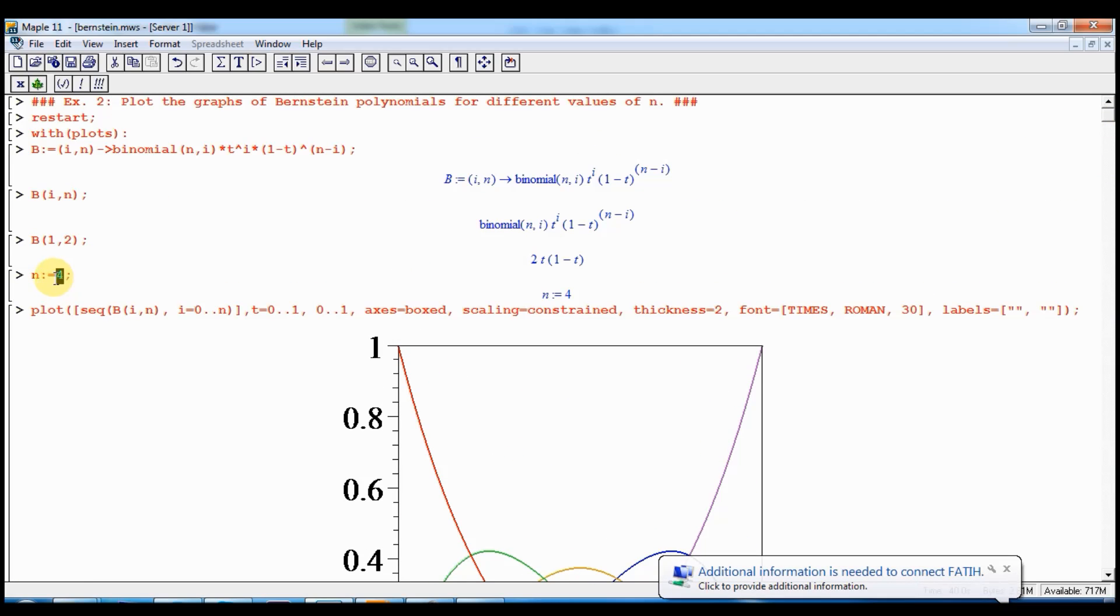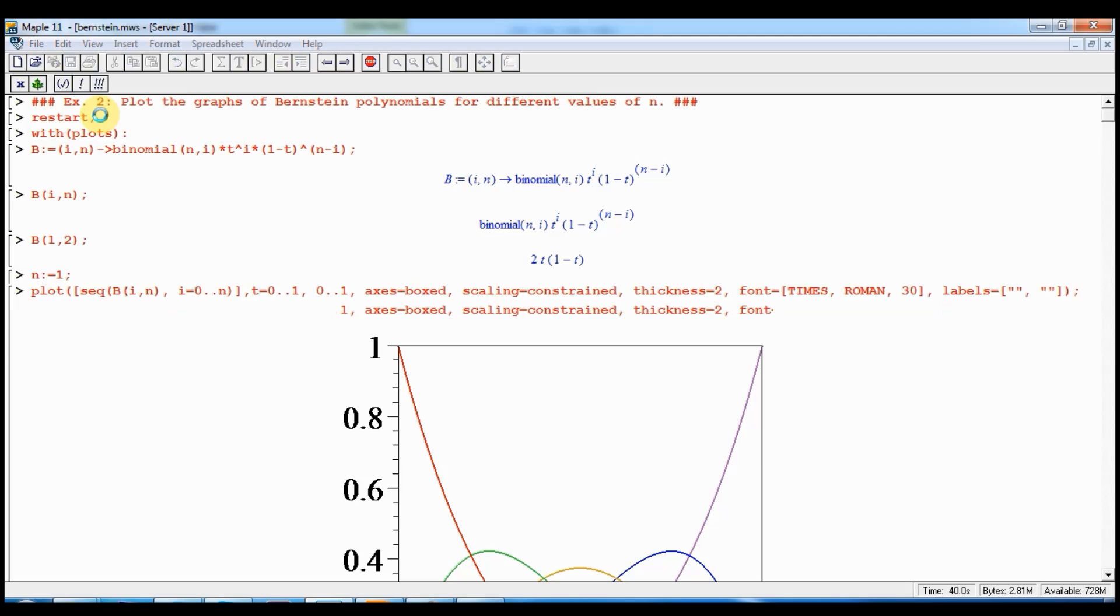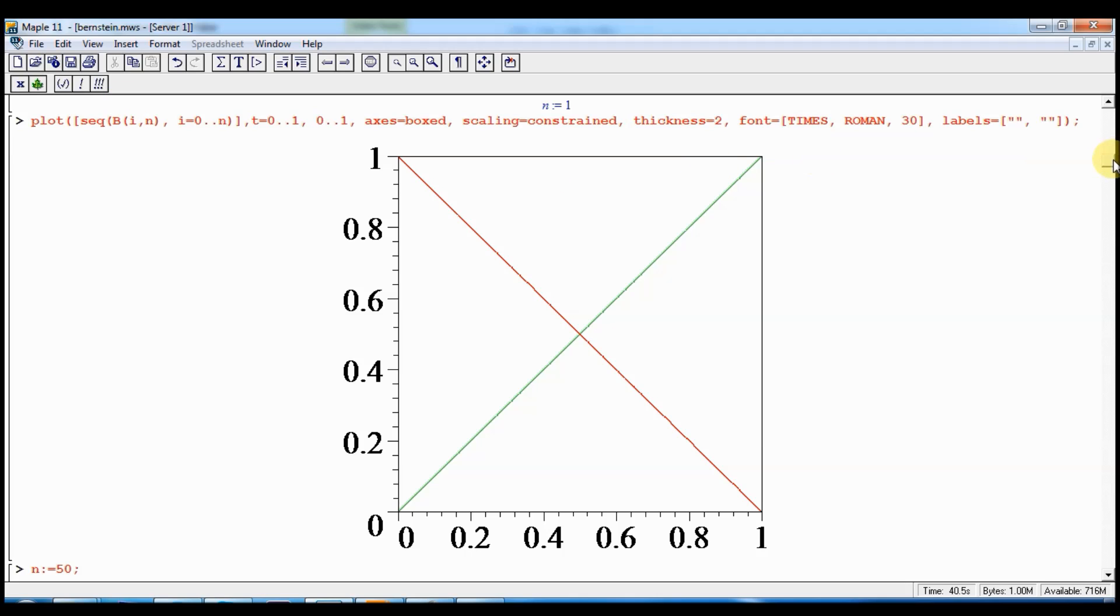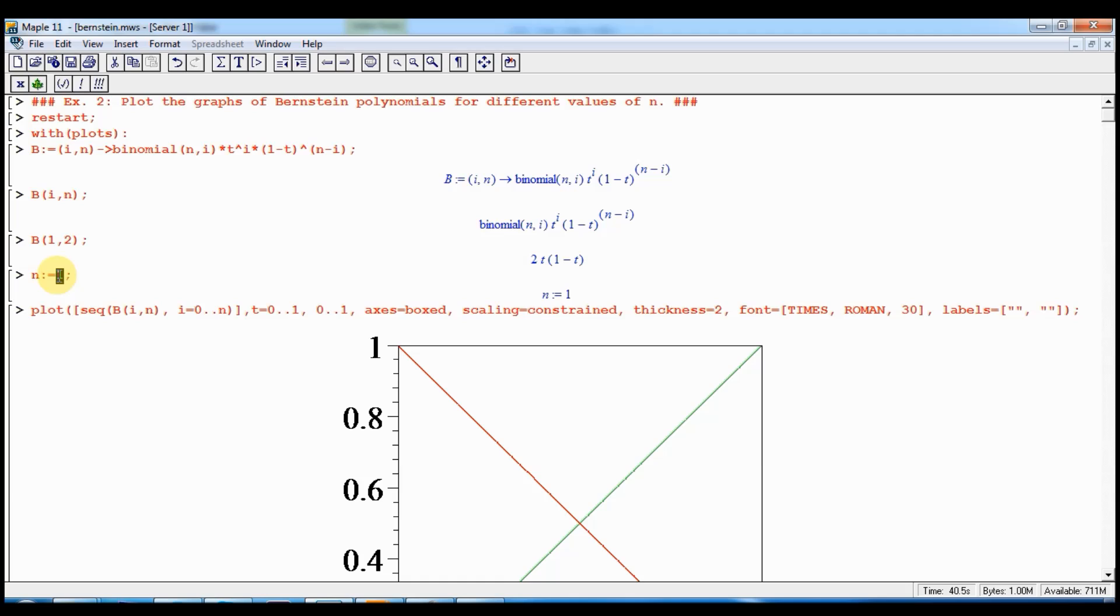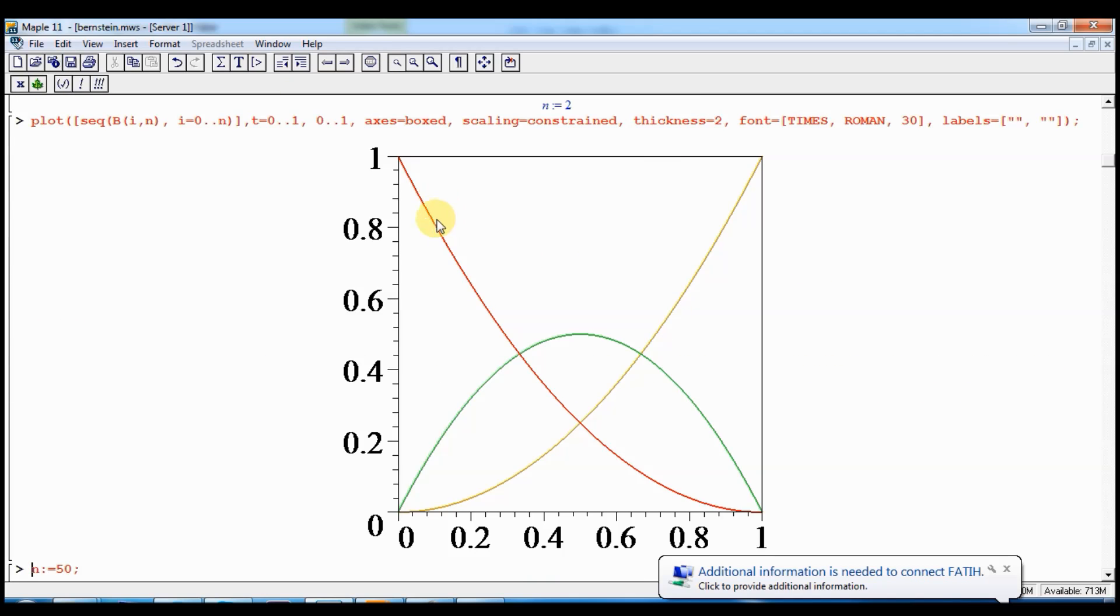Let me change n to 1 and compute the previous lines, just pushing enter at the end of these lines. As a result, I have 2 linear functions here. And finally, let me compute Bernstein polynomials for n equal to 2 and show their graphs. As a result, I have 3 polynomials at the same coordinate system.